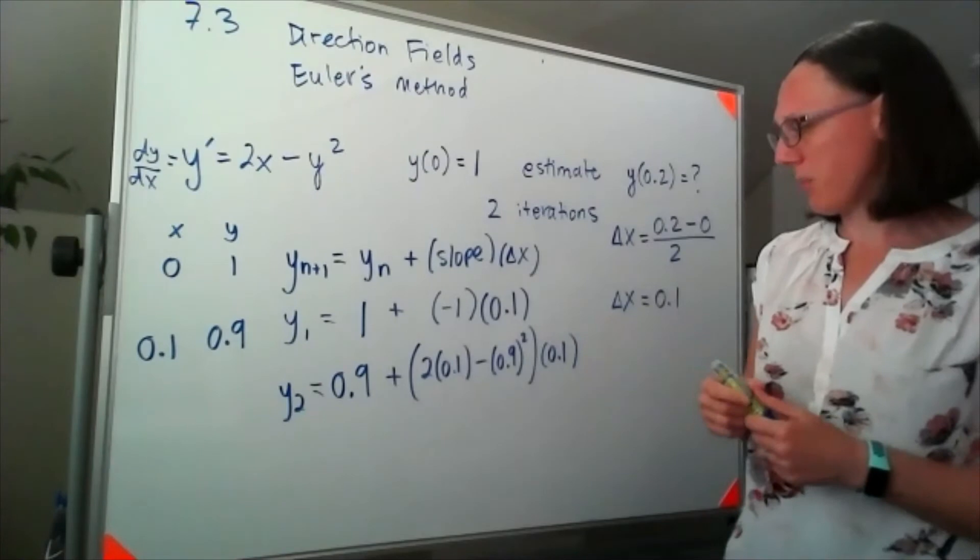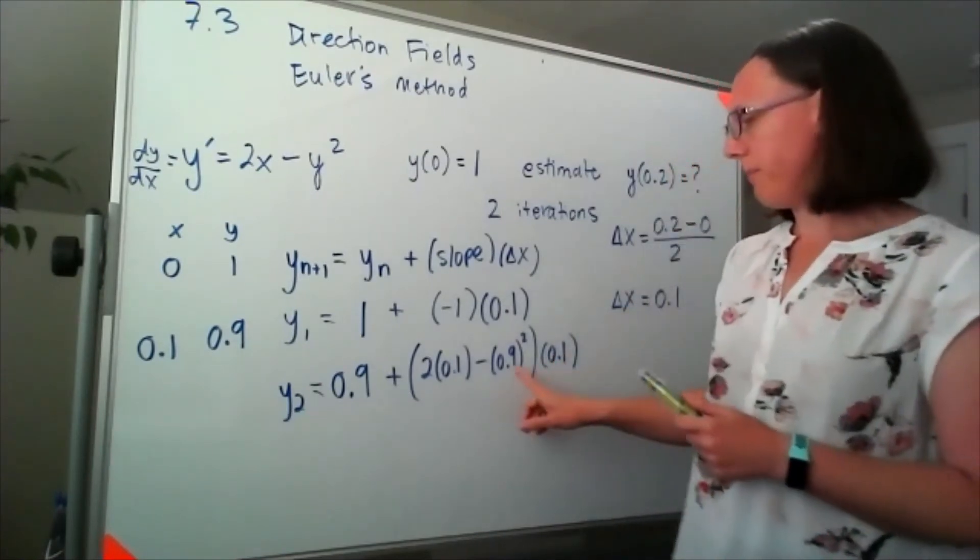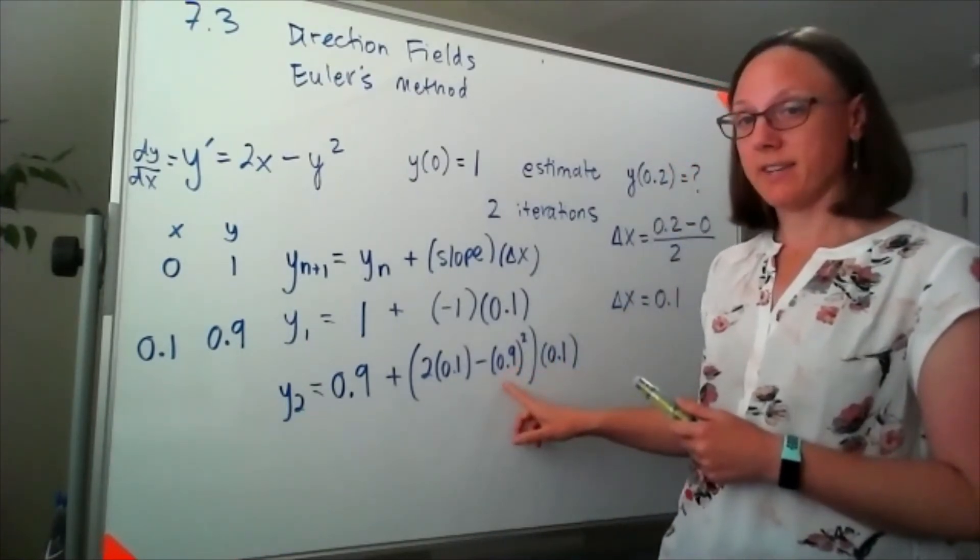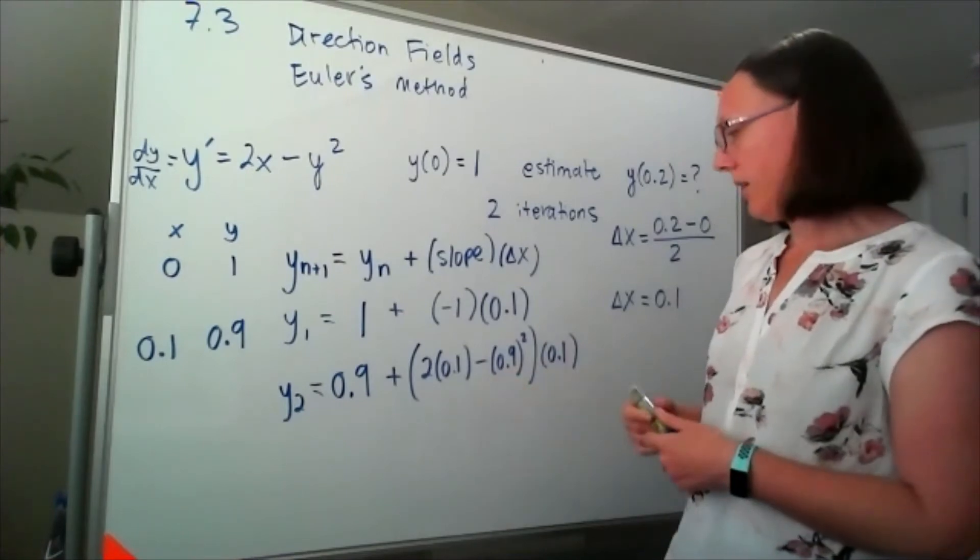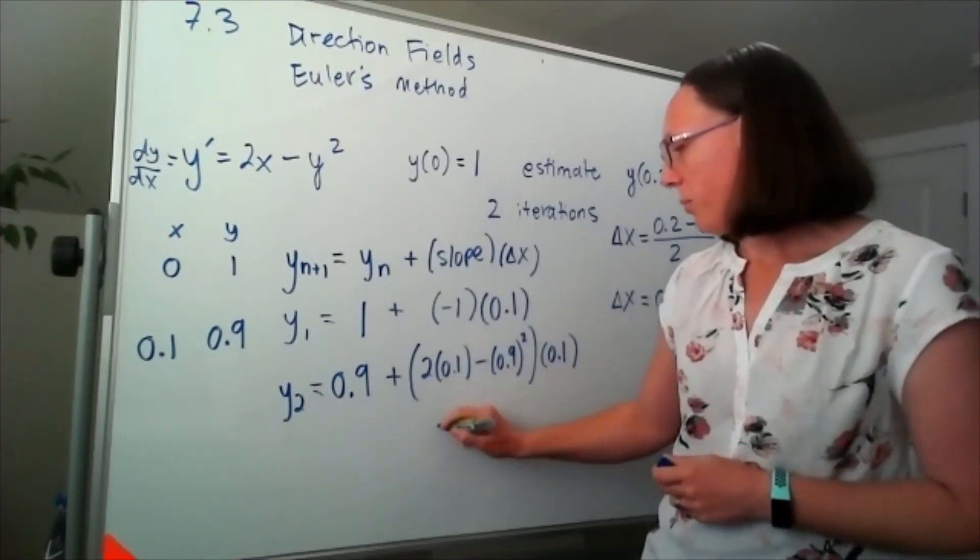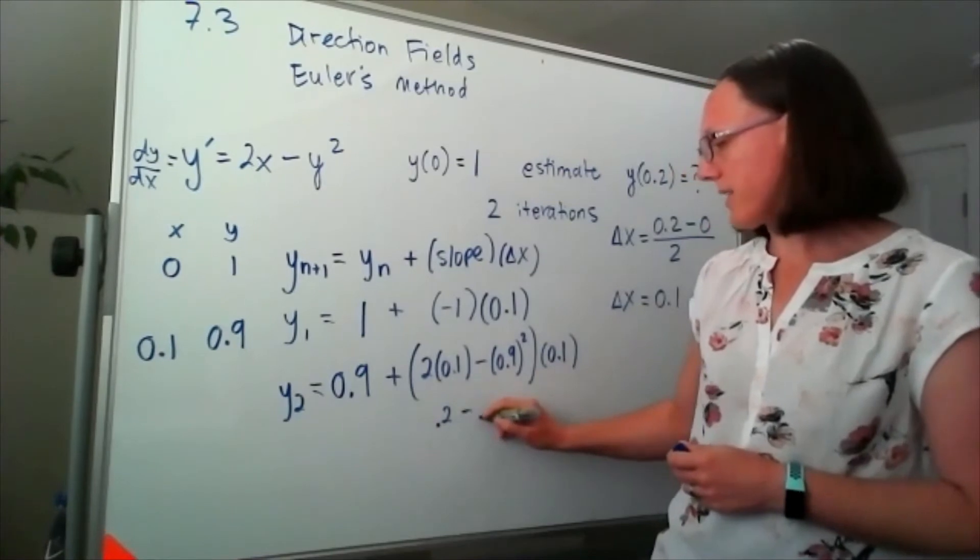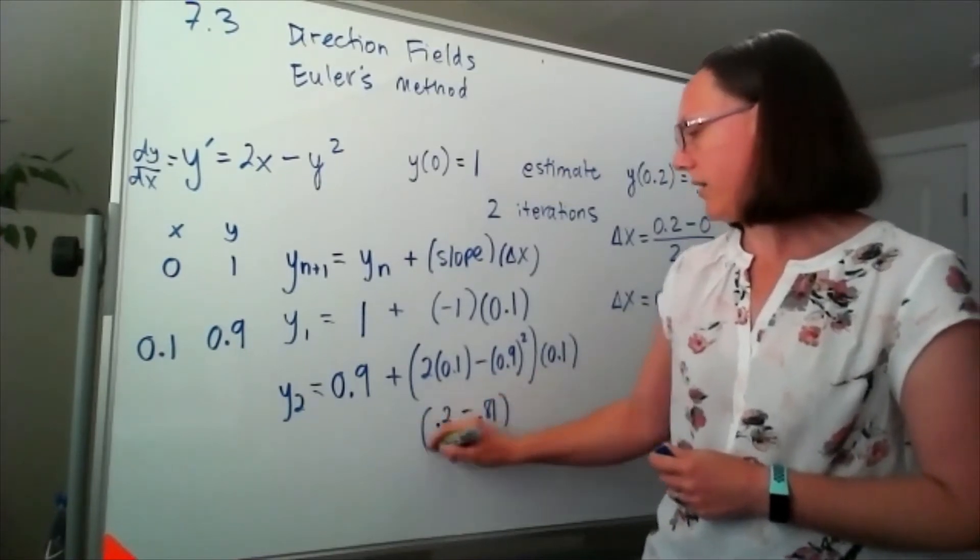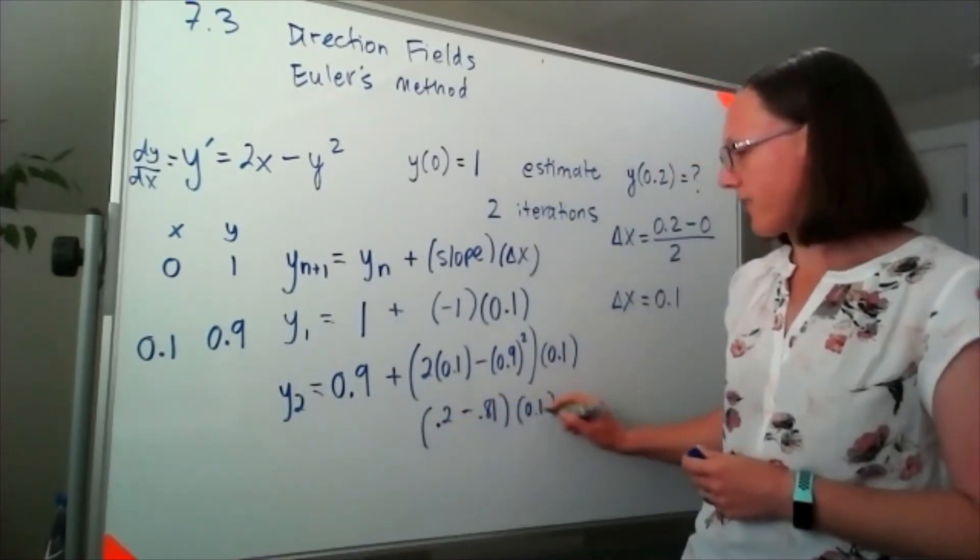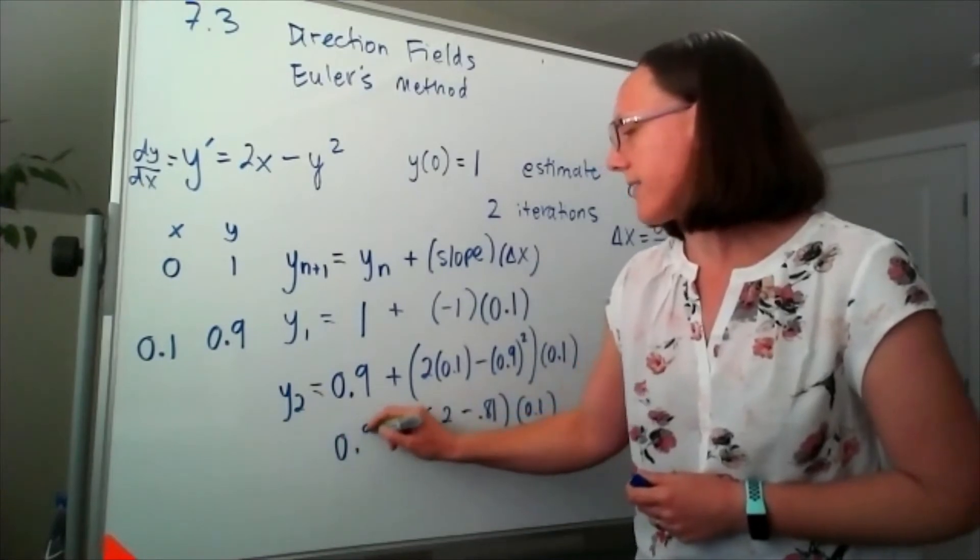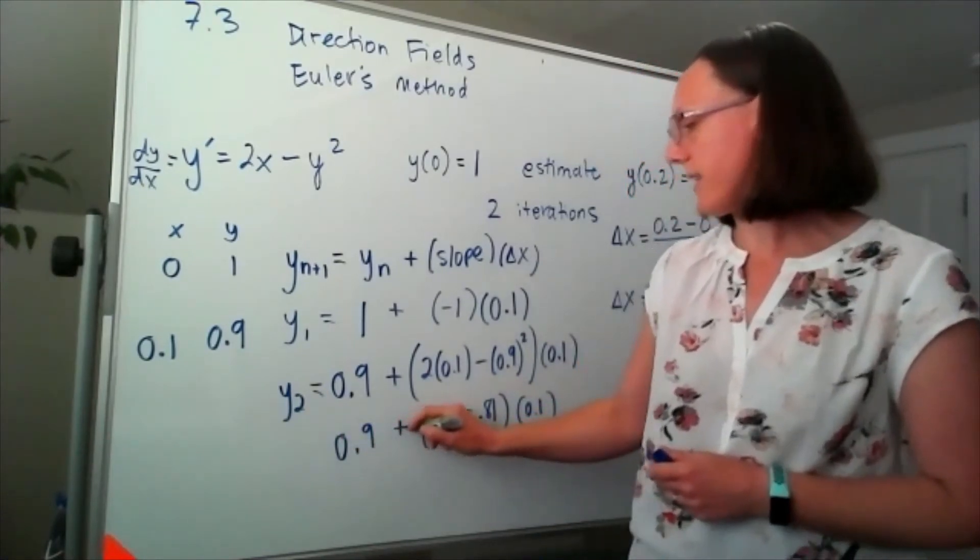And to simplify that, 0.9 times 0.9 is going to give me 0.81. So I've got 0.2 minus 0.81 times that 0.1, and I've got 0.9 plus that.